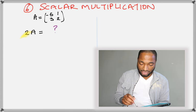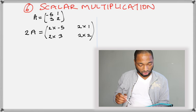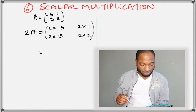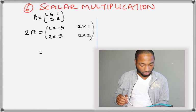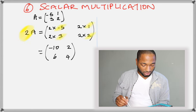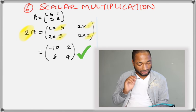And it's being multiplied by 2. That 2 next to the a means 2 times a, right? So, we simply multiply each number by 2, 2 by negative 5, 2 by 1, 2 by 3, 2 by 2. And you get your answer. Nice little green tick there.